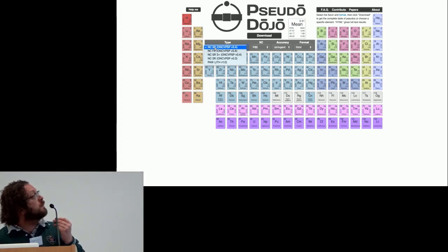So in this box one can select the version. We have norm-conserving scalar relativistic, and 0.4 is the latest version with some improvement. The fully relativistic version with spin-orbit coupling.